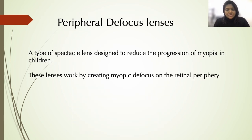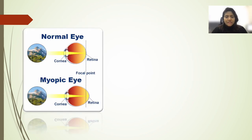The newer concept for myopia progression spectacle lenses is the peripheral defocus lens, which has been widely studied. It is scientifically proven that the myopic defocus these lenses create helps reduce myopia progression. In a normal emmetropic eye, rays are focused on the retina, whereas in a myopic eye the axial rays are focused in front of the retina.